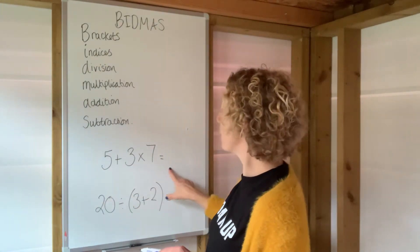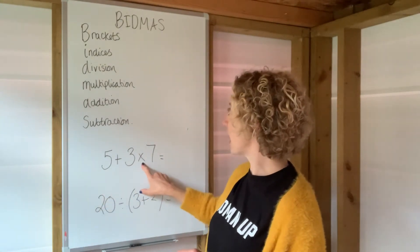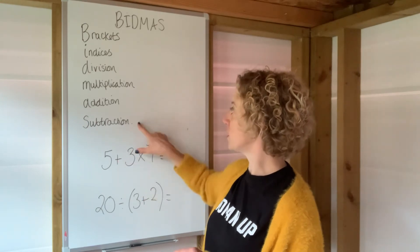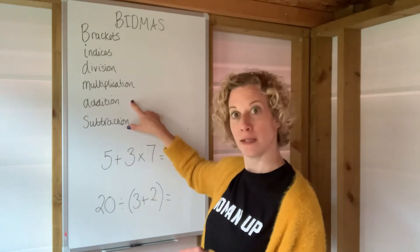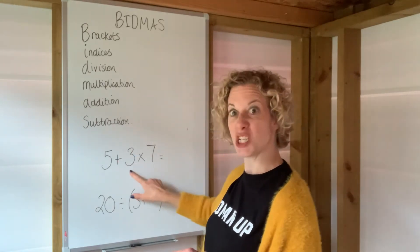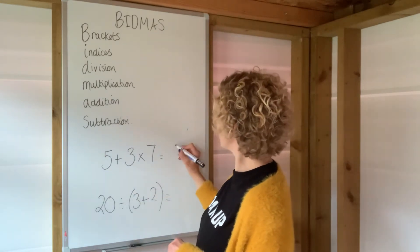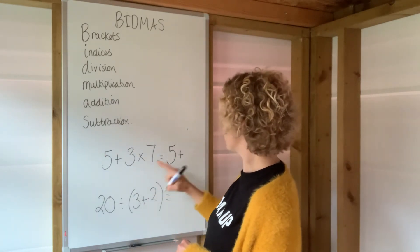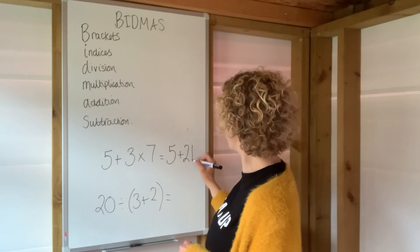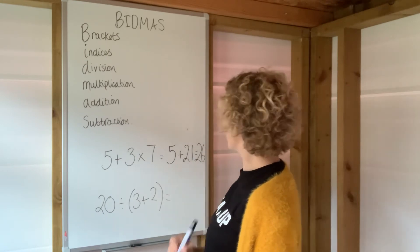So for example, in this question here, because multiplication comes before addition in the rule of BIDMAS, we have to do the multiplication first. So this will be 5 plus 3 times 7, which is 21, giving us 26.